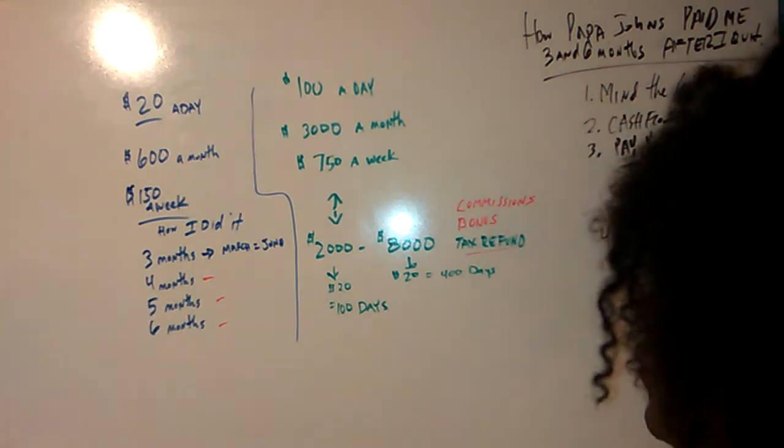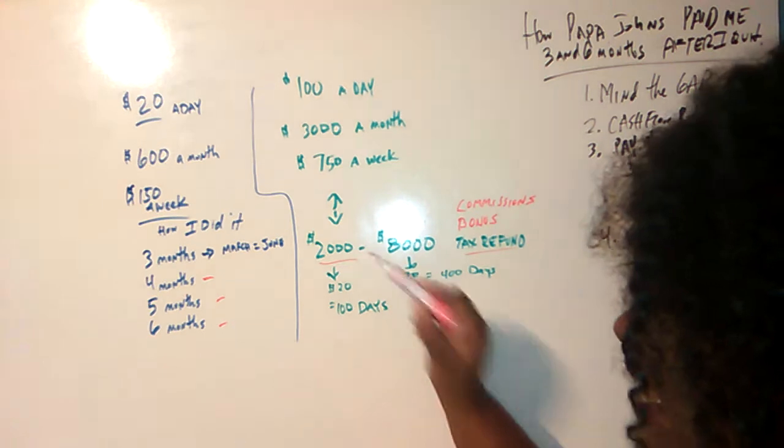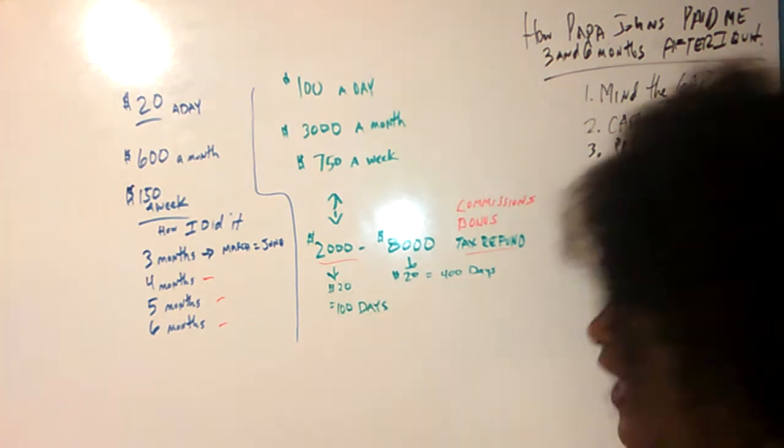If you had $2,000, let's say you had a tiny refund check and we had to break it into $20 a day.